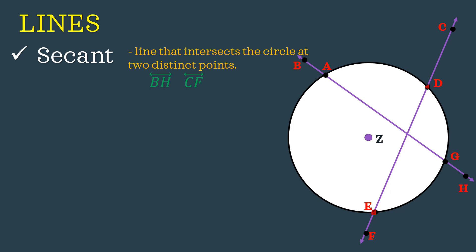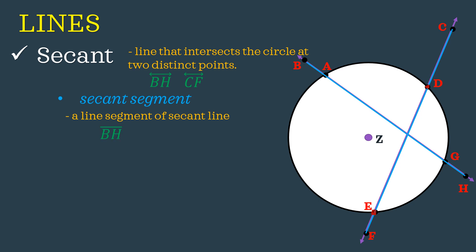Under secant, we have a couple of terminologies. First is the secant segment — a line segment of a secant line. A secant segment has no arrowhead because it is just only a segment. We use the symbol for line segment: line segment BH and also line segment CF. This only differs from secant line in terms of the symbol, because a secant segment is just only a segment.